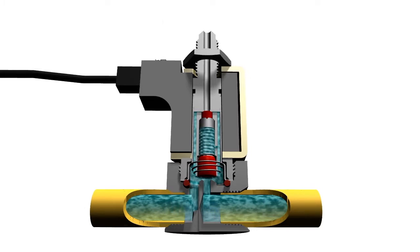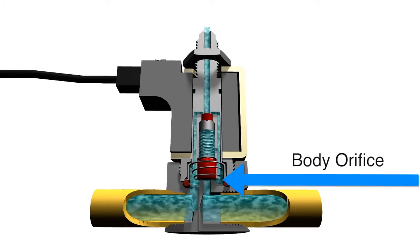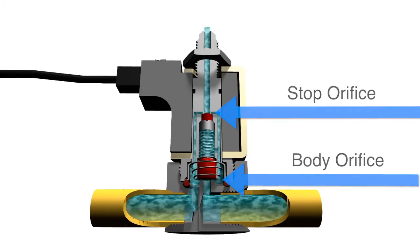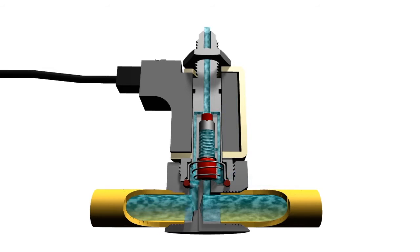It has two orifices, the body orifice and the stop orifice, one of which is always open. This allows for two paths of flow.